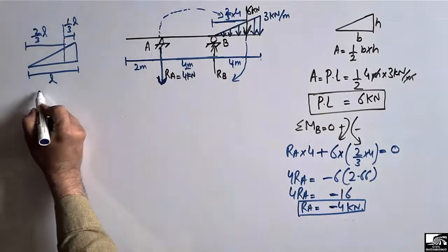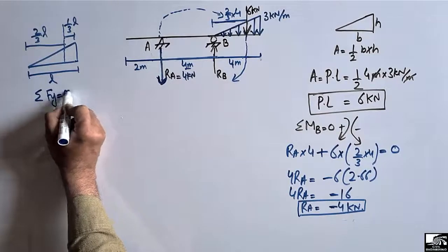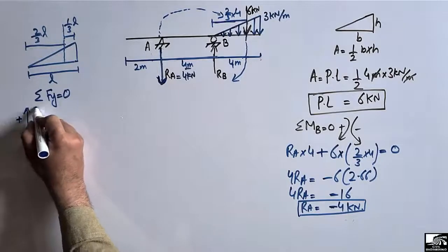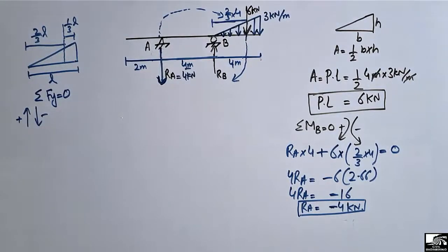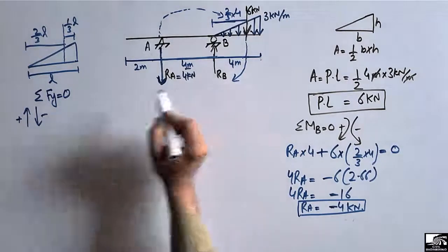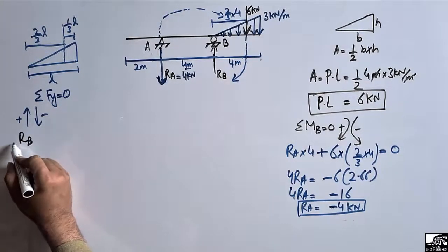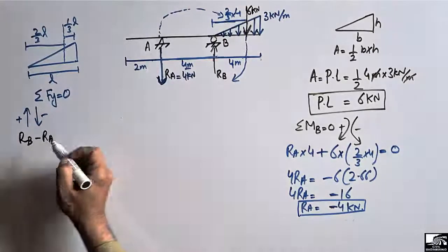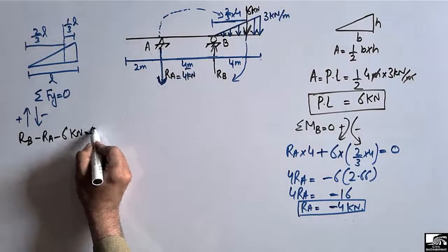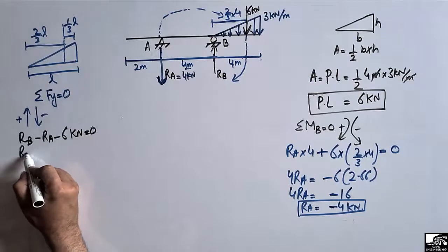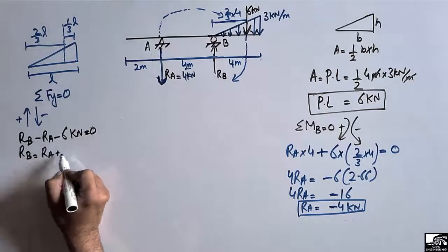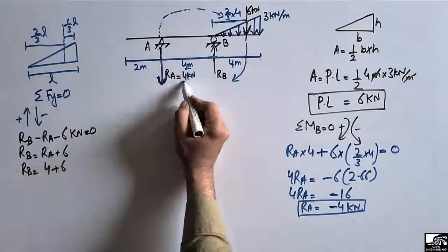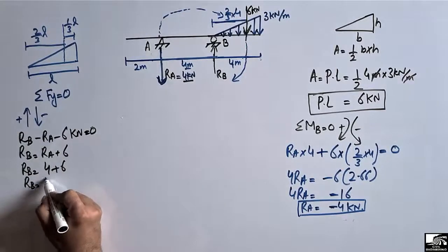To find RB, we use the summation of all vertical forces equal to zero. Upward forces are positive and downward forces are negative. RB is upward (positive), while RA and the 6 kilo Newton load are both downward (negative). So RB equals RA plus 6, which is 4 plus 6, giving RB equal to 10 kilo Newton.